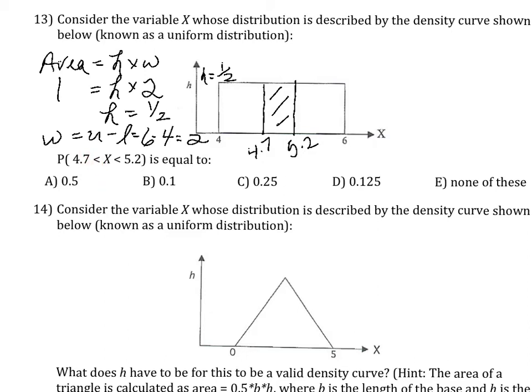To calculate this, using the same formula, area equals height times width. The height is still 1 half, but the width has changed. How do we calculate that? Width is equal to the upper minus the lower end, or 5.2 minus 4.7, which is just .5 or half.